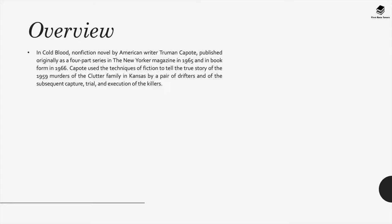In Cold Blood is a nonfiction novel by the American writer Truman Capote, published originally as a four-part series in the New Yorker magazine in 1965 and in book form in 1966. Capote used the techniques of fiction to tell the true story of the 1959 murders of the Clutter family in Kansas by a pair of drifters, and of the subsequent capture, trial, and execution of the killers.